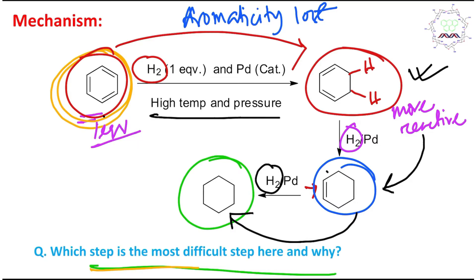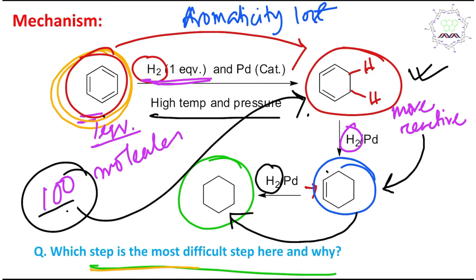This is easy, I agree, but with one equivalent of benzene, one equivalent of hydrogen is given. That's the main problem here. For example, your reaction mixture has 100 molecules of benzene. Among these 100 molecules, when 25 molecules are converted into this butadiene, instantly these 25 molecules will be converted again into cyclohexene, and these 25 will be converted into cyclohexane.